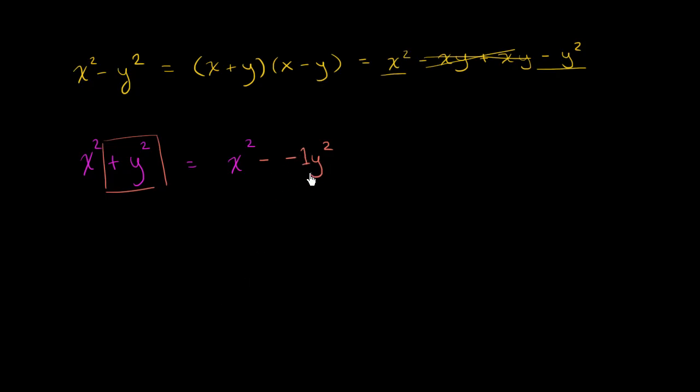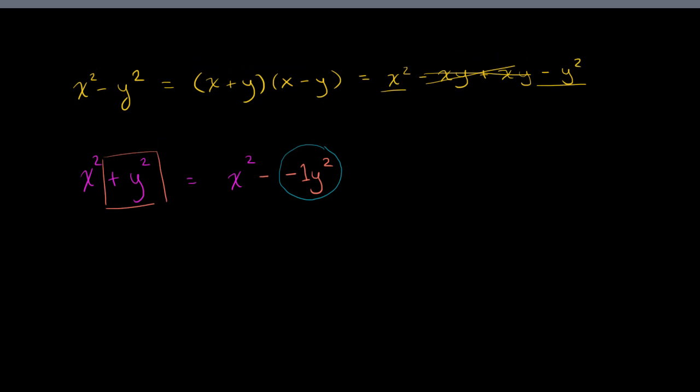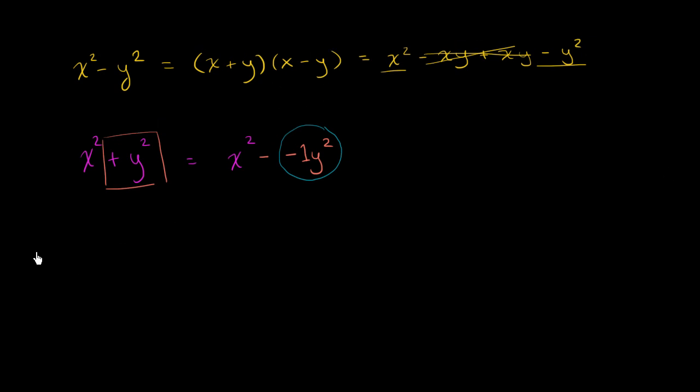Now if we wanted to write this whole thing as a square, if we wanted to rewrite this whole thing as a square, how would we do it? Well we have y squared, and what's negative 1 the square of? Well we know, by definition, negative 1 is equal to i squared, or that i squared is equal to negative 1. So let's rewrite it that way.